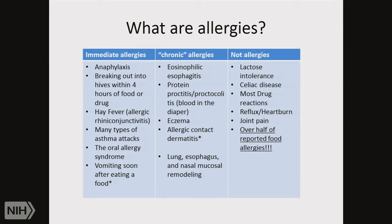We can break allergies down into immediate-type and chronic allergies. Anaphylaxis — when someone drops their blood pressure and their throat begins to close — is the most severe form of allergy; it's what can kill people. Breaking out into hives within four hours of a food or drug is a pretty classic manifestation. Getting hay fever — probably the first lay description — is actually an allergy to hay and now to everything else in the air. Lots of asthma attacks occur, but not all asthma attacks are allergic.